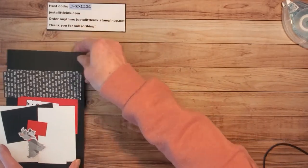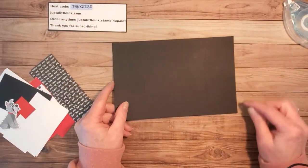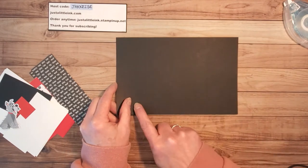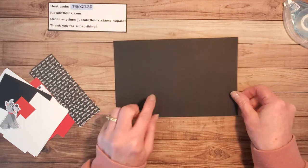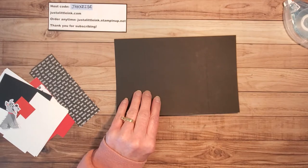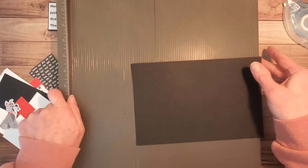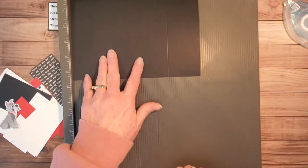You need a piece of five and a half by eight and a half out of basic black and I'm scoring it two and an eighth inch on both sides. I have found I love my simply scored tool so I'm going to pull it up here and show you how simple this is. I've already scored it but I want to show you.